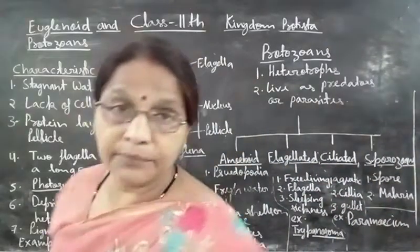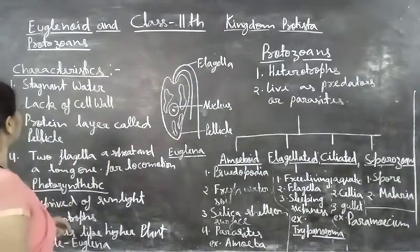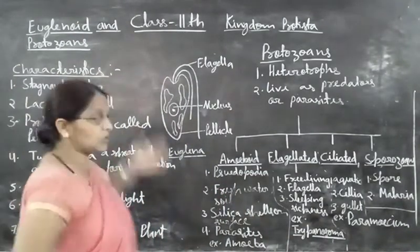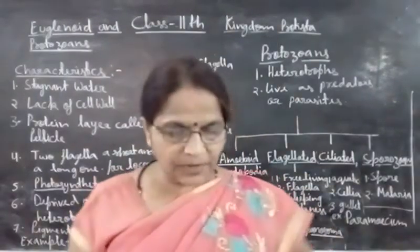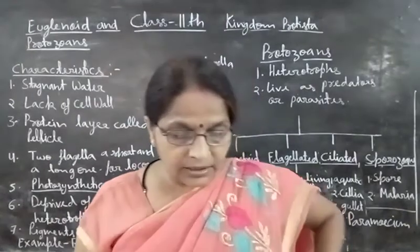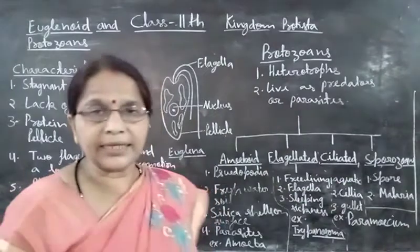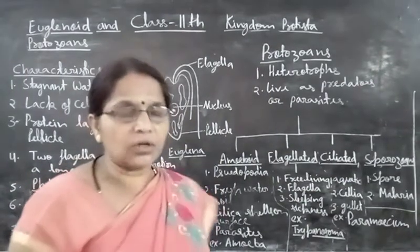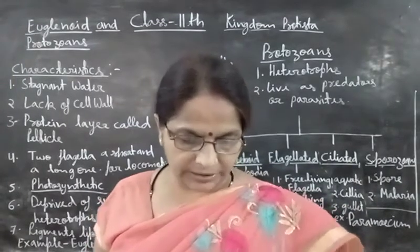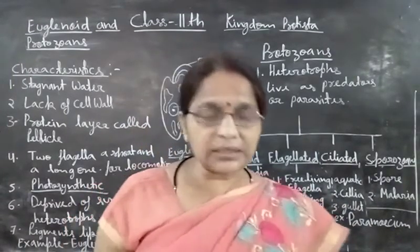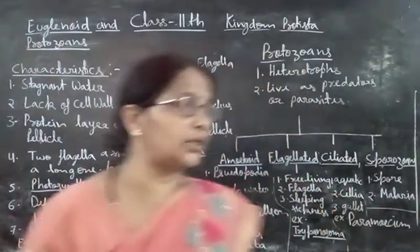Hello students. I am going to teach you about Kingdom Protista. In Kingdom Protista, it includes chrysophyta, dinoflagellates, euglenoid, slime molds, and protozoans. In some books, it is written as algal-like organisms like chrysophyta, dinoflagellates, and euglenoid, and fungus-like slime molds, and animal-like protozoans.